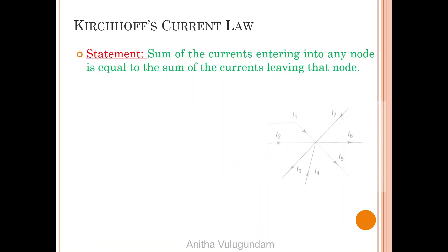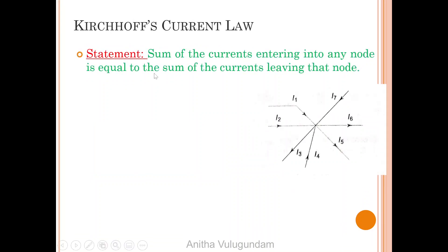Kirchhoff's current law: the sum of currents entering into any node is equal to the sum of currents leaving that node. From the figure we can write: currents entering into the node are I1, I2, I4, and I7. Currents leaving the node are I3, I5, and I6. According to the statement we can write I1 + I2 + I4 + I7 = I3 + I5 + I6.